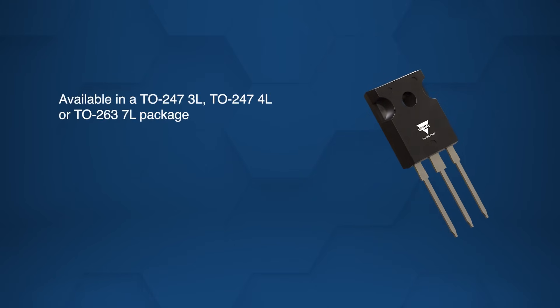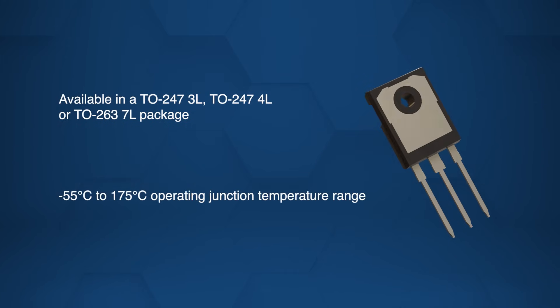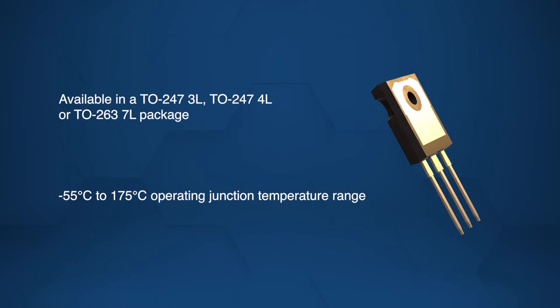These MOSFETs are available in TO-247-3L, TO-247-4L, or TO-263-7L packages and function within a wide junction temperature range of negative 55 degrees Celsius to 175 degrees Celsius.